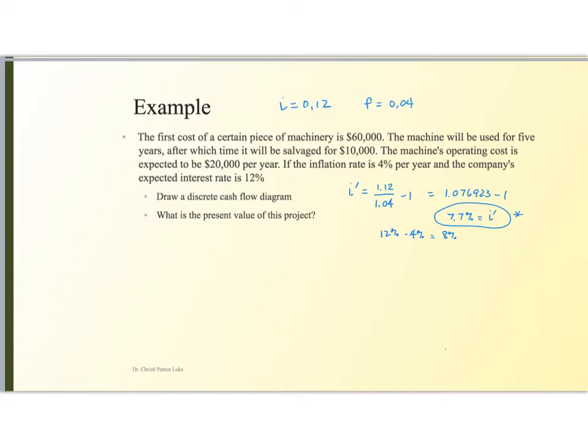It says to draw a discrete cash flow diagram. This is a five-year period. Times 0, 1, 2, 3, 4, 5. And the first year, I'm going to spend $60,000. The next year, I'm going to spend $20,000. And each year, I'm going to spend $20,000 over the life of the project, five years. In the last year, however, I'm also going to salvage this and receive $10,000.